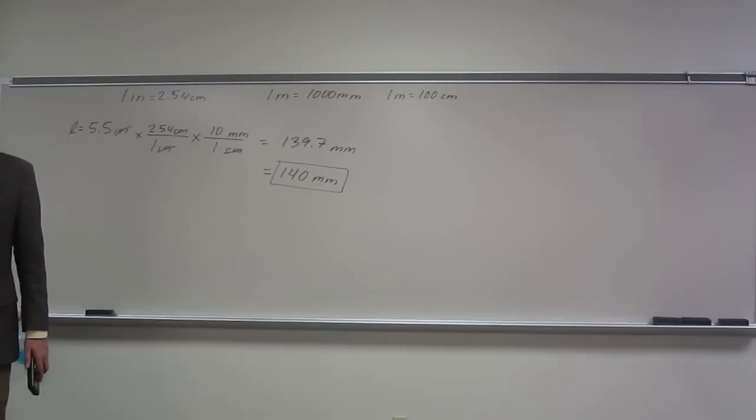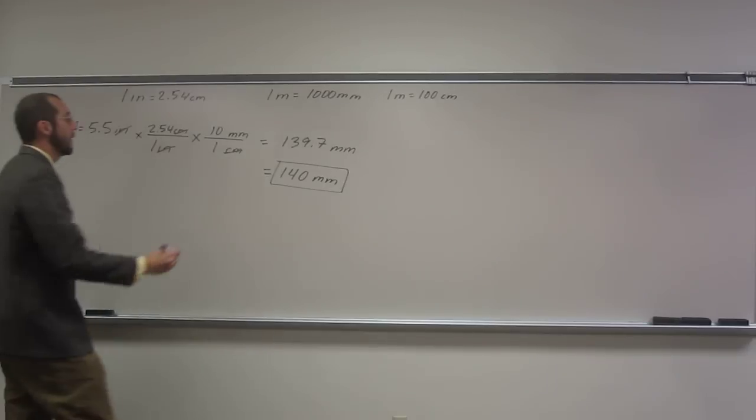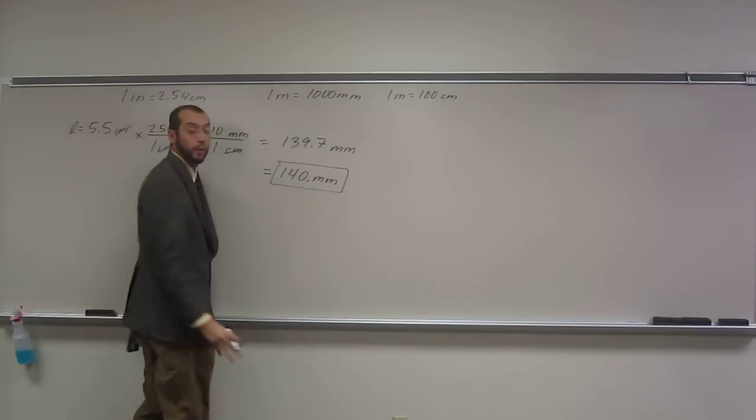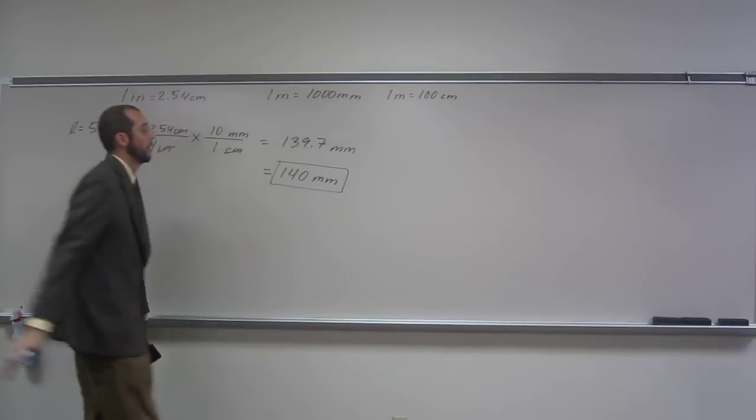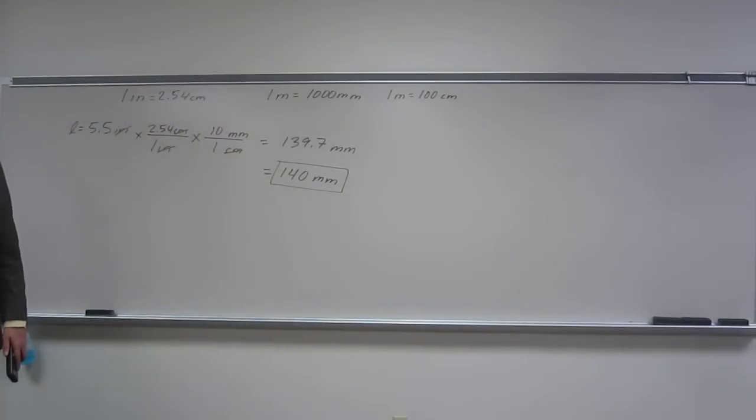Because that trailing zero is insignificant if there's no decimal point in the answer. So you can still write the trailing zero and it's still considered two significant figures. Yeah, that's two. If I did this, that'd be three significant figures, because there's now a decimal point in the answer. Or I could say 1.4 times 10 to the 2.